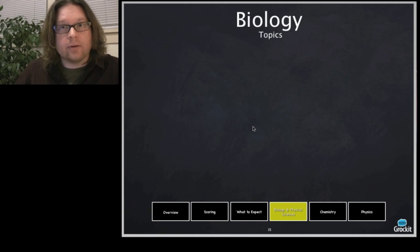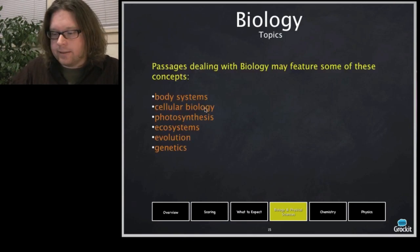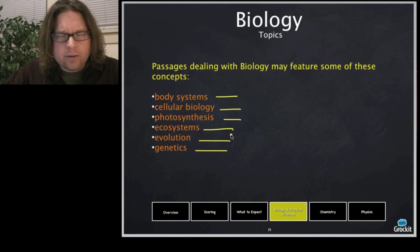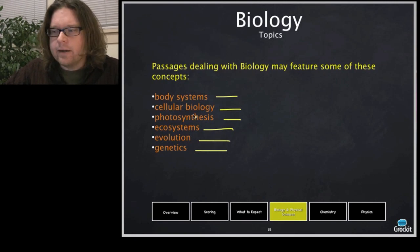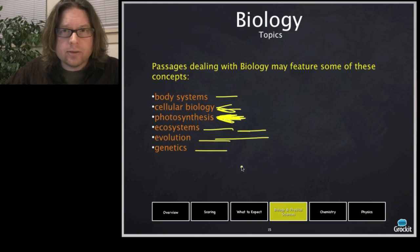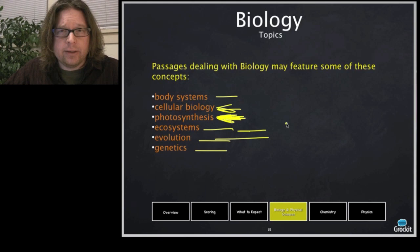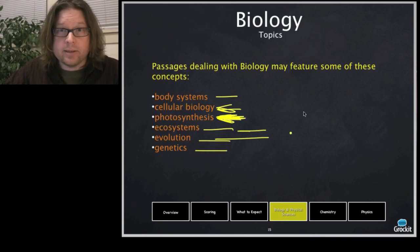Biology is one of the overarching subject areas on the ACT. Passages may deal with body systems, cellular biology, photosynthesis, ecosystems, evolution, and genetics. Note how wide-ranging these topics are — from really small processes like photosynthesis and cellular biology all the way up to ecosystems and evolution. You may have covered some of these in school already, but it's not required. You're unlikely to have studied all of them, so expect to see some new material, and don't plan on your prior knowledge saving you.